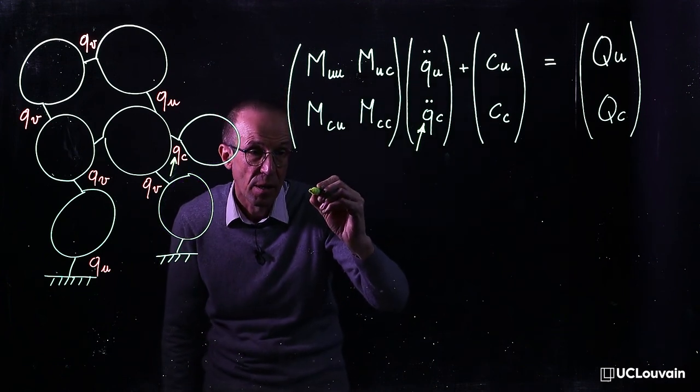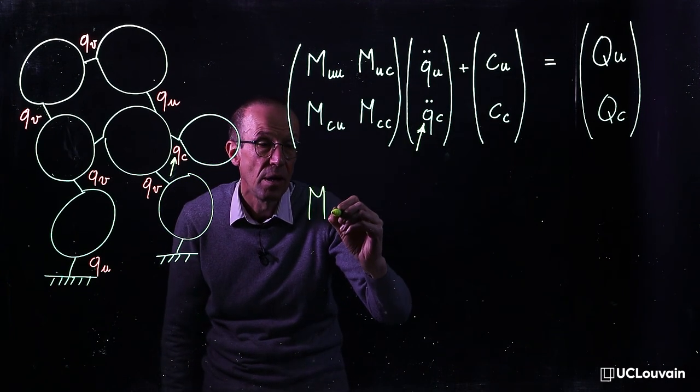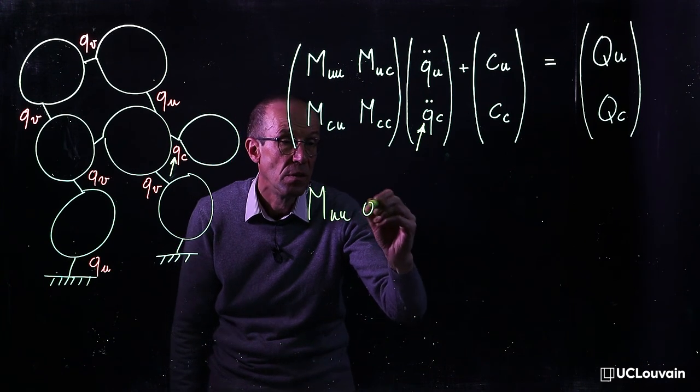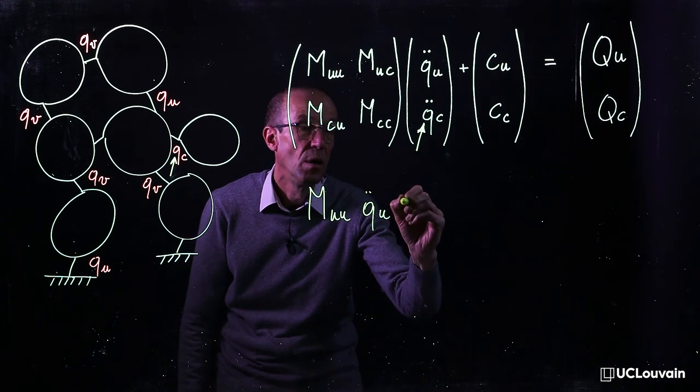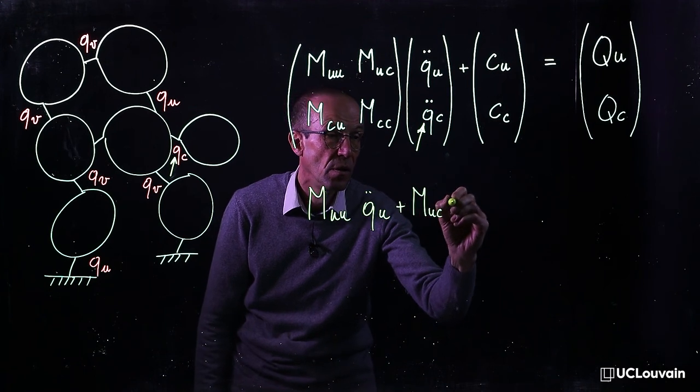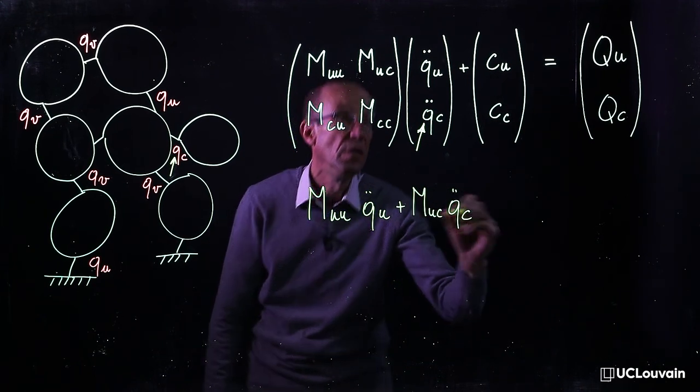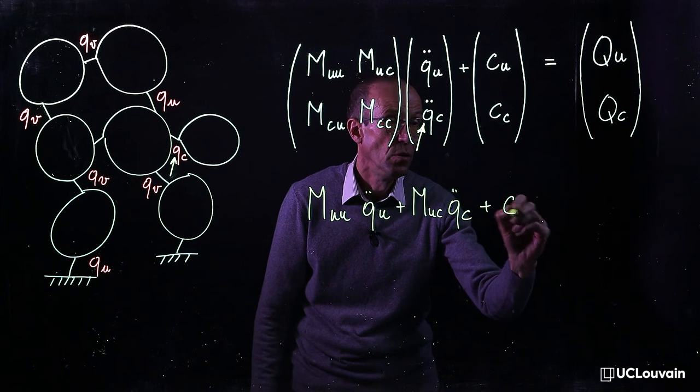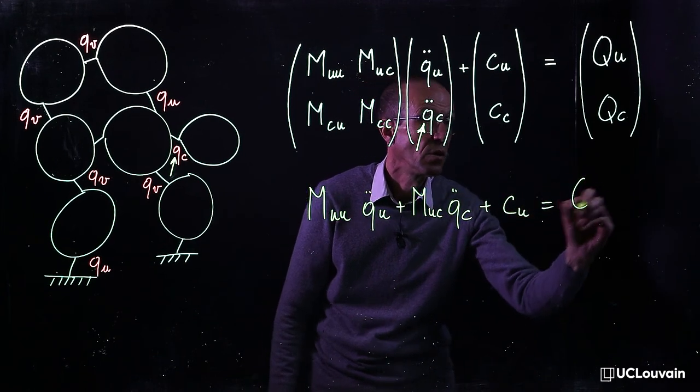This equation can be written as follows: m_uu q double dot u plus m_uc q double dot c plus c_u is equal to q_u.